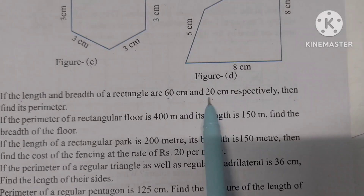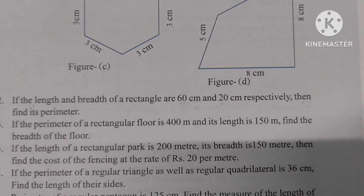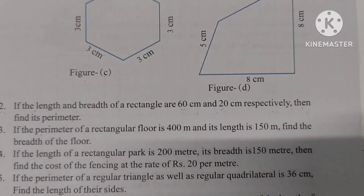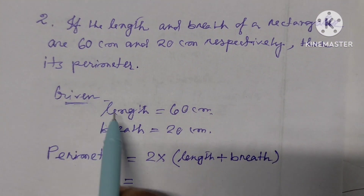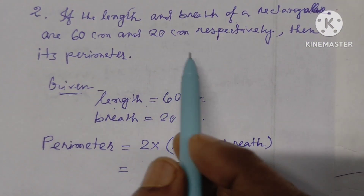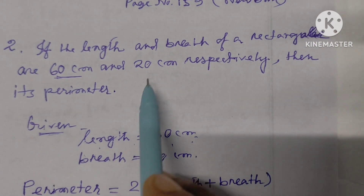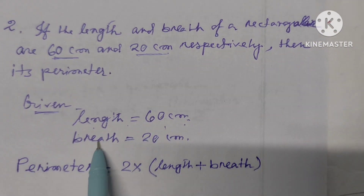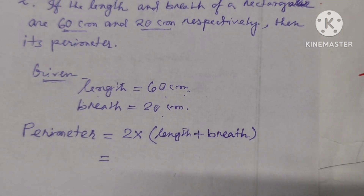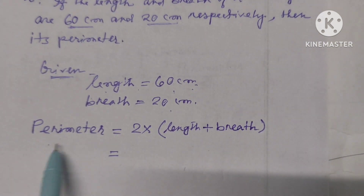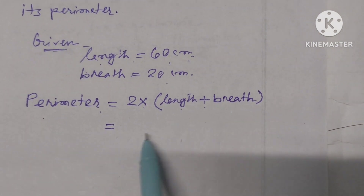The length of the rectangle is 60 cm and the breadth is 20 cm. Using the formula: how to find the perimeter of a rectangle? Perimeter is equal to 2 times length plus breadth.